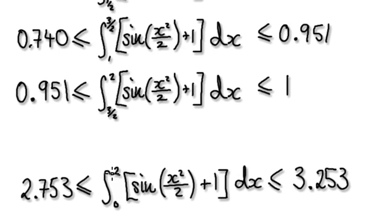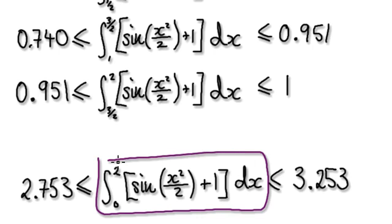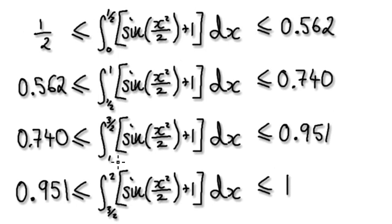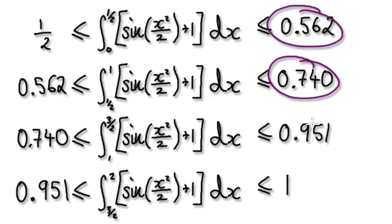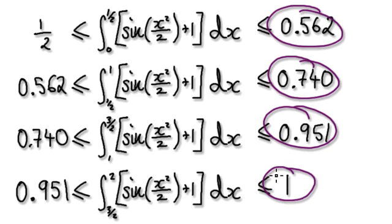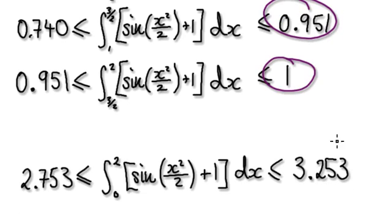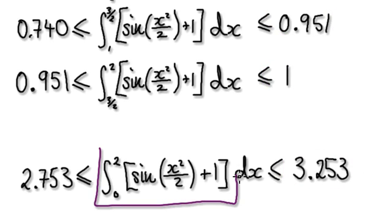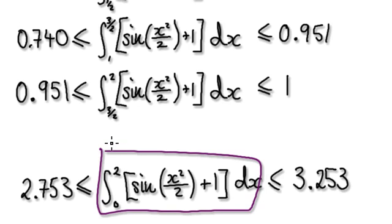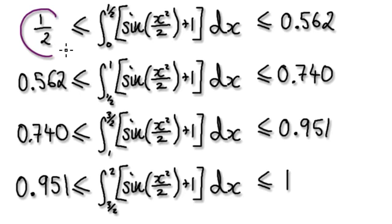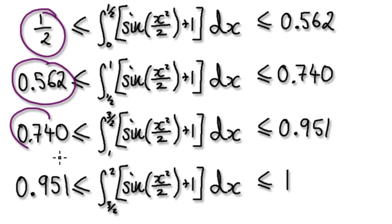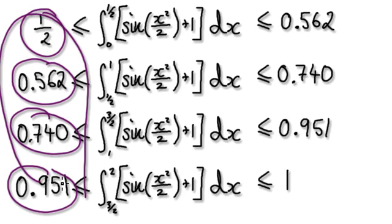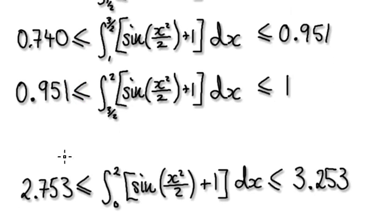Now sum up everything from zero to two. The biggest possible value that this thing could be would be you summing up all the biggest possible values — all the biggest possible values would be these. Sum everything up and it will come to this. And then for this bit here, think what's the smallest possible value that this thing could be. The smallest possible value would be you summing up all the smallest possible values. Adding up all of these will give you this.